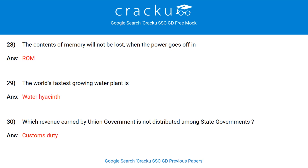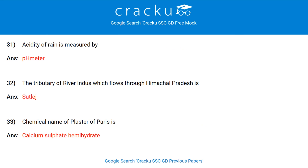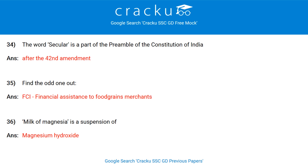The world's fastest growing water plant is Water Hyacinth. Wage revenue earned by the Union Government is not distributed among state governments — Customs Duty. Acidity of rain is measured by a pH meter. The tributary of river Indus which flows through Himachal Pradesh is River Sutlej. Chemical name of plaster of Paris is calcium sulphate hemihydrate. The word 'secular' became a part of the Preamble of the Constitution of India after the 42nd amendment.